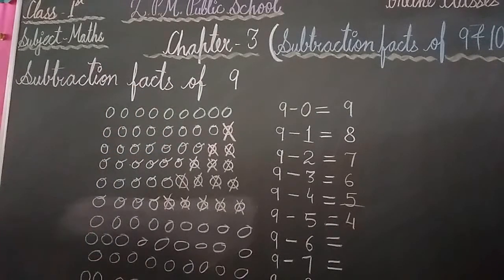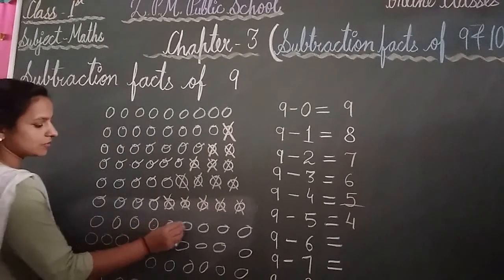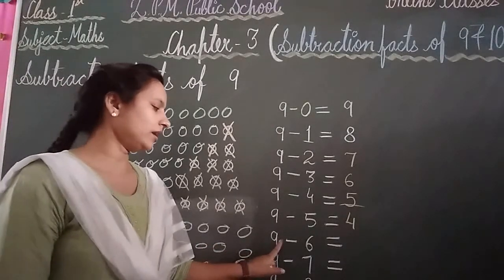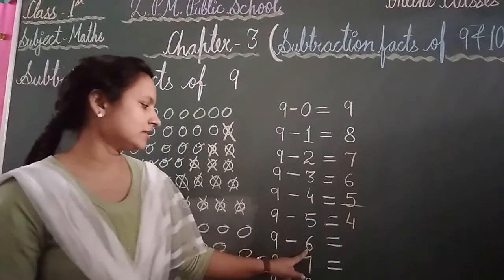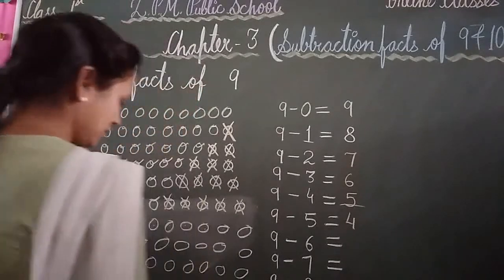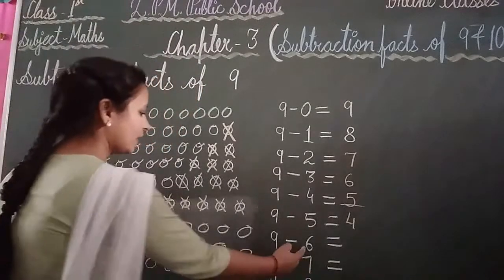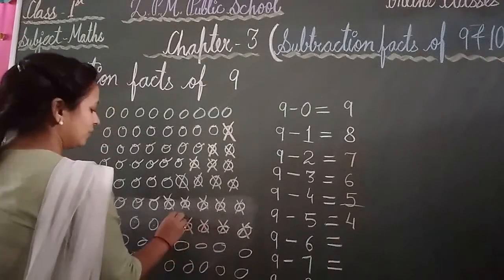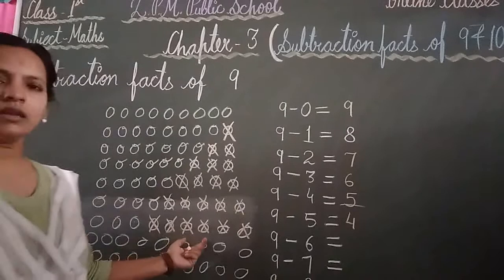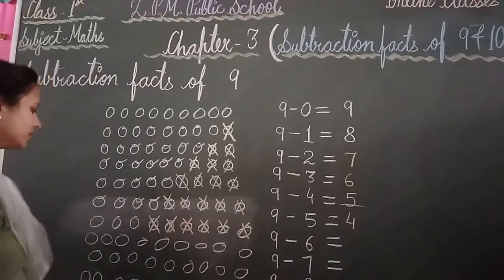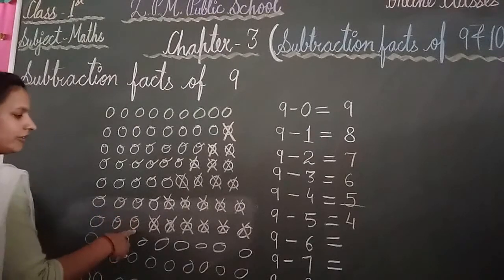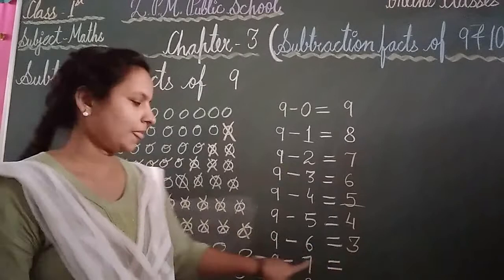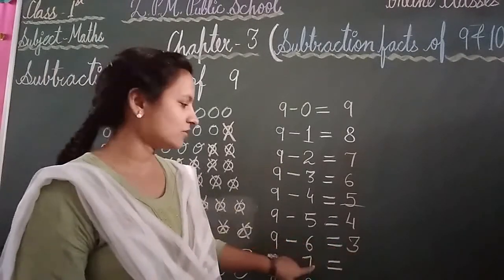Again draw your 9 balls: 1, 2, 3, 4, 5, 6, 7, 8 and 9. Write your digit: 9 minus 6. Cross out 6 balls: 1, 2, 3, 4, 5, 6. Count the balls left: 1, 2, 3. How many balls are left? 3. 9 minus 6 equal to 3. The answer is 3.